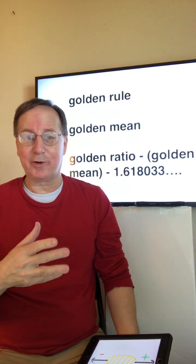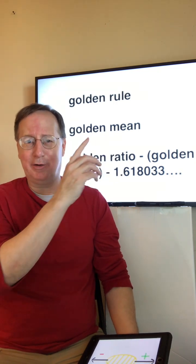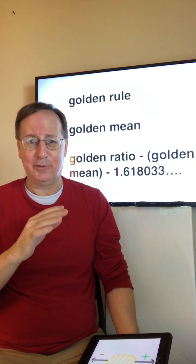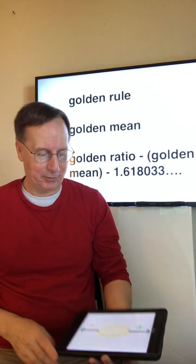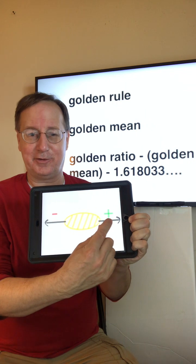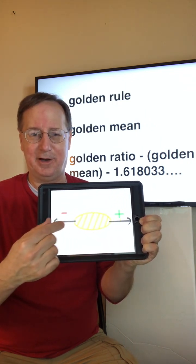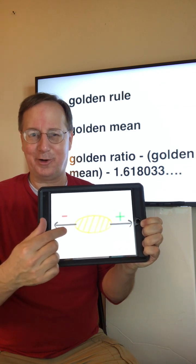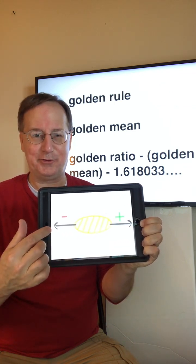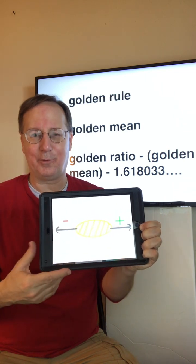To give you an example, in working out, trying to get in shape, there is the Golden Mean of exercise—just the right amount for that person. Too much this way could result in sickness or even death. Too much this way, not enough, will result in no progress and being out of shape.